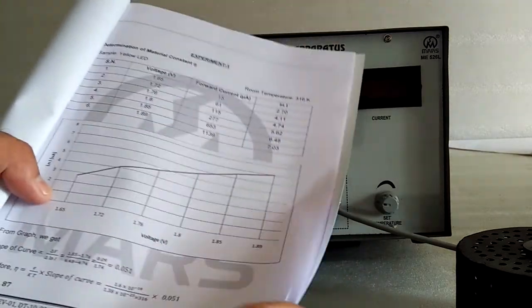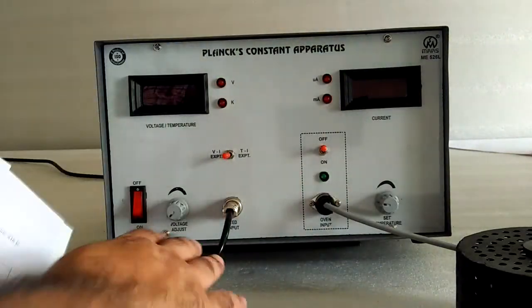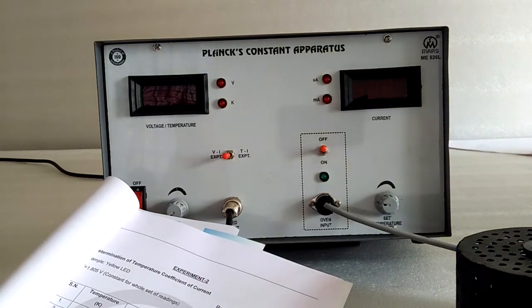With this, we find the material constant. Next, we heat the LED in the oven and note down the current in milliampere.